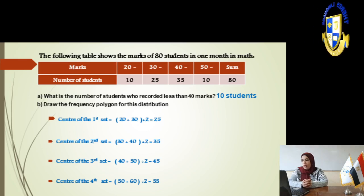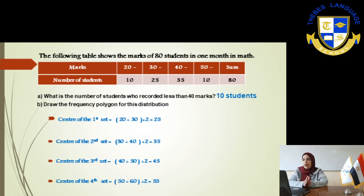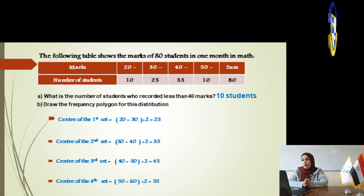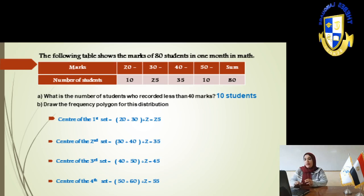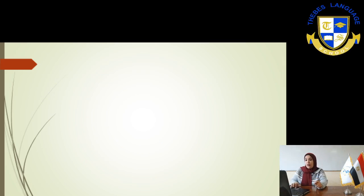Number 1, calculate the center as we did before. 20 plus 30 over 2, it will be 25. And so on. Then 35, 45, and 55 to get the center of each set.